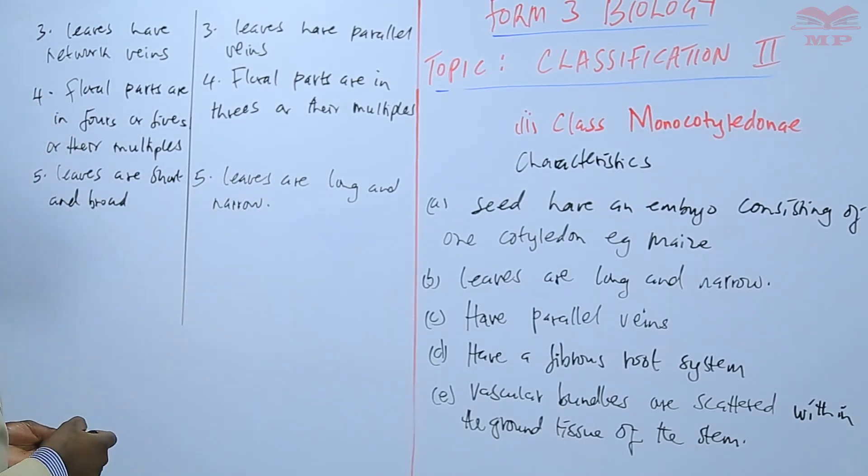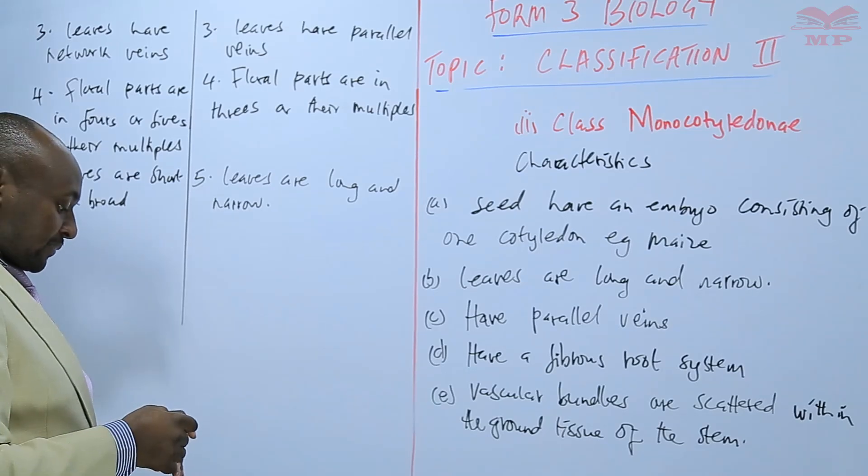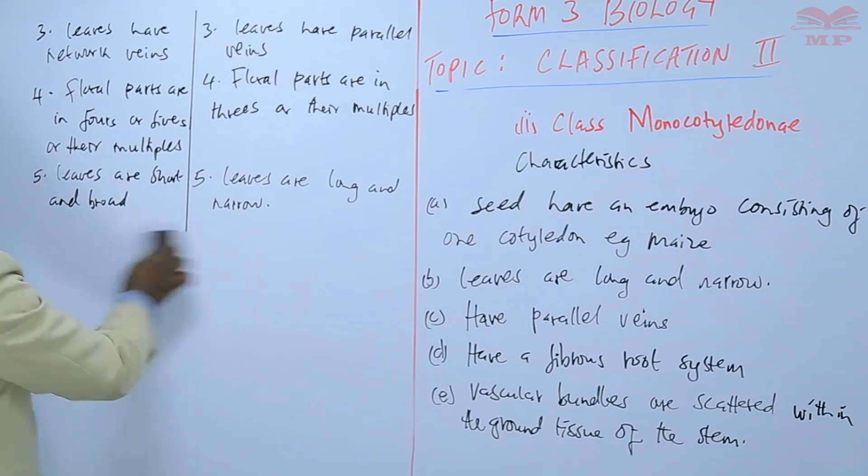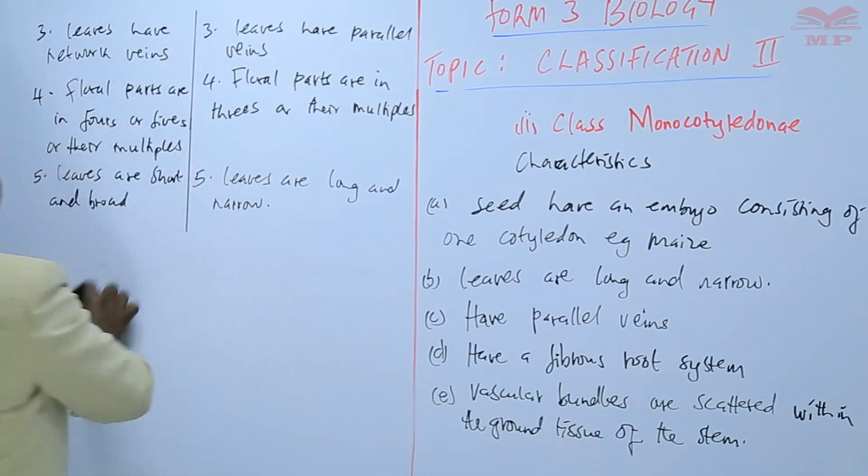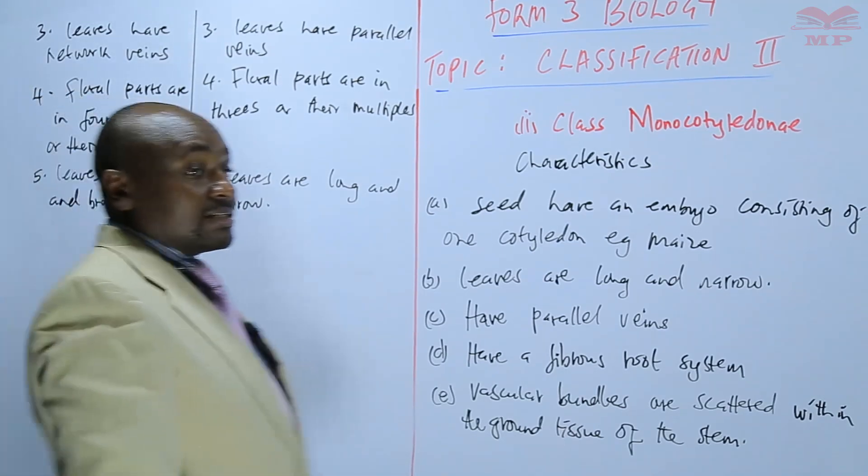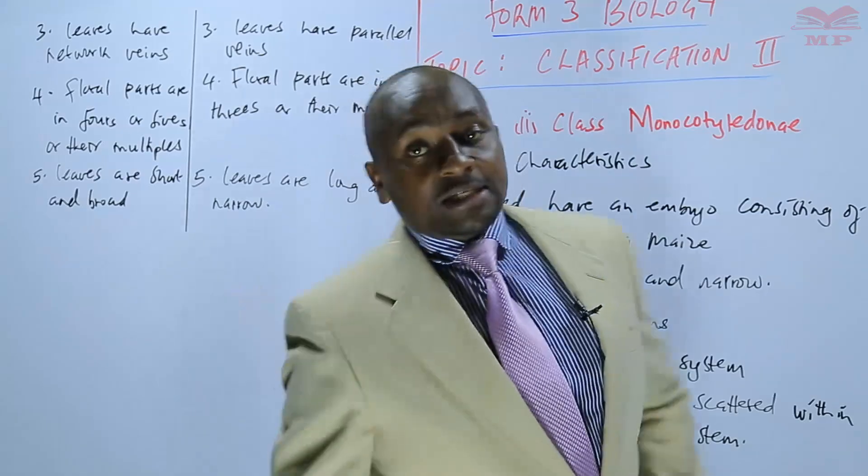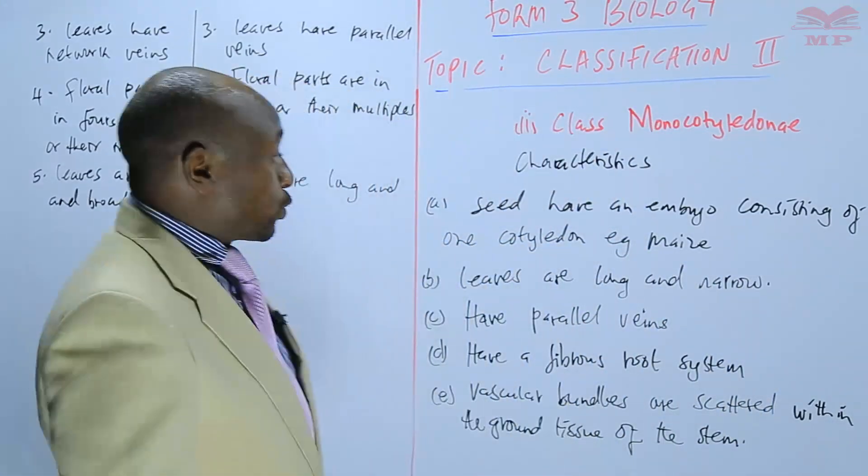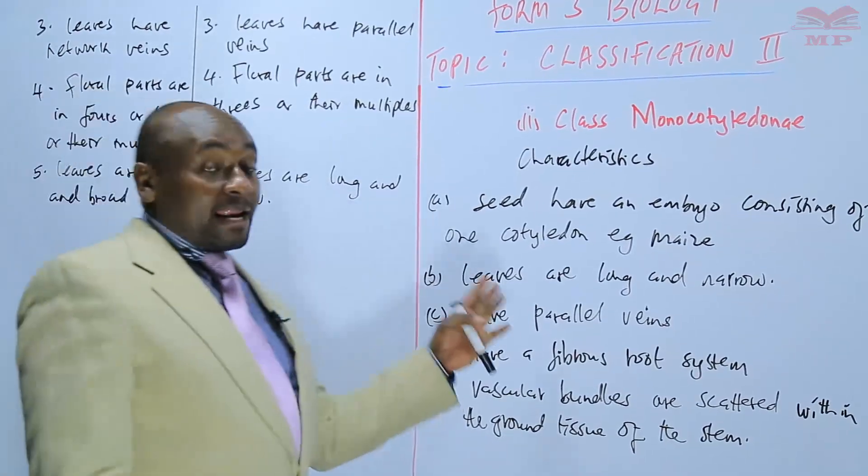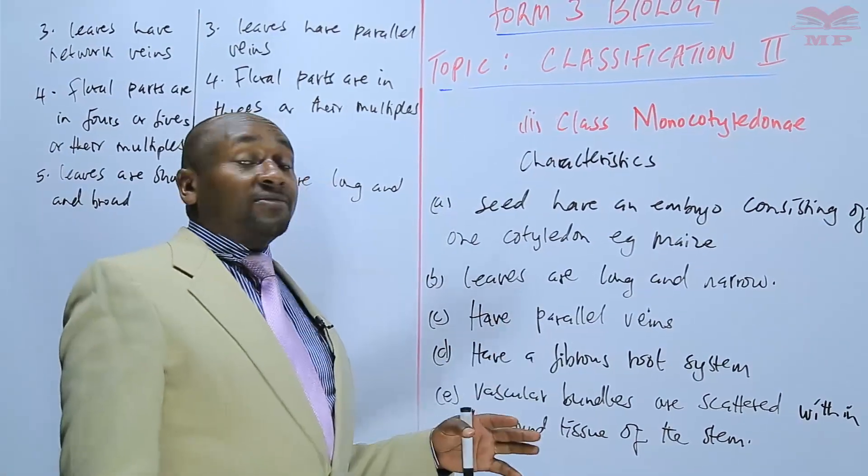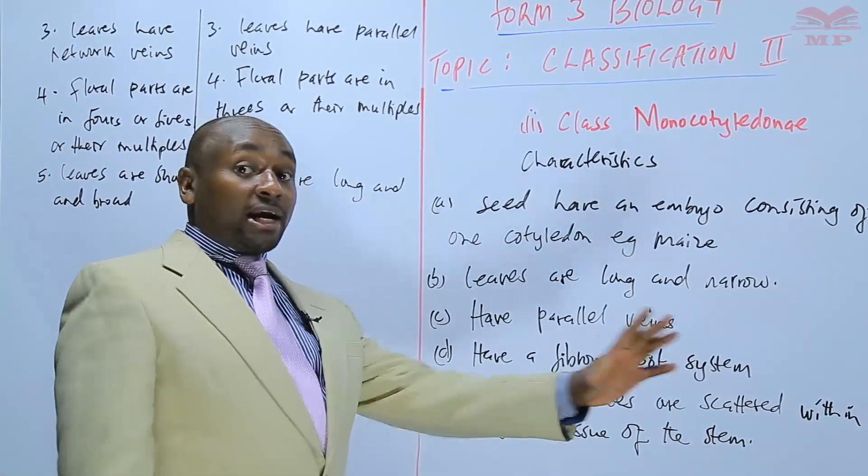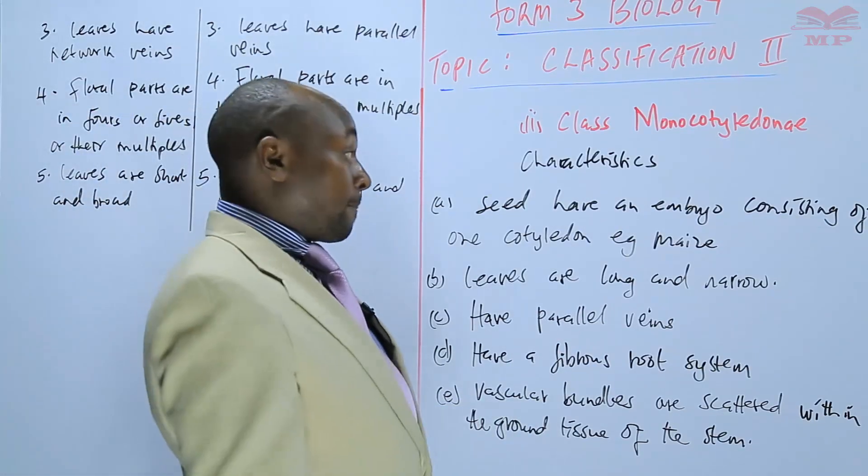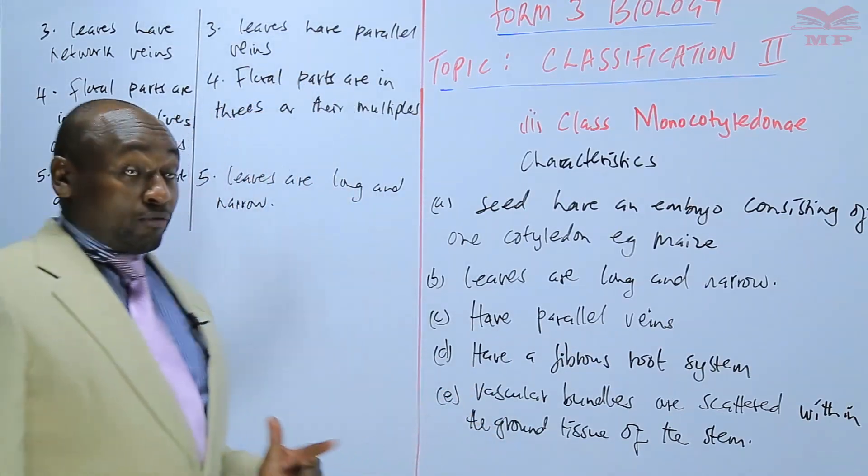You'll be able to get more differences from the characteristics that we have just identified. The differences can be in terms of the leaves, in terms of the stem, in terms of the roots, and in terms of the seeds. Note that a learner can be asked to give the differences in terms of the leaves only, for instance, or in terms of the roots only, or in terms of the stem.